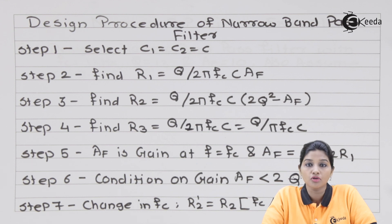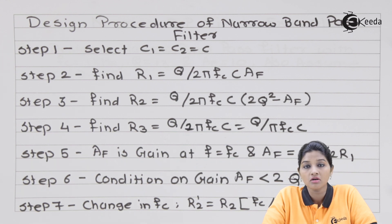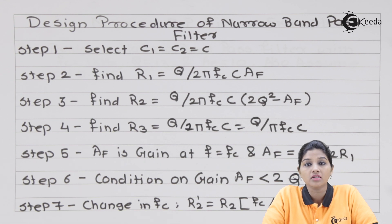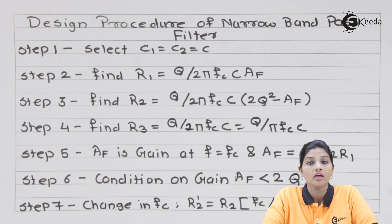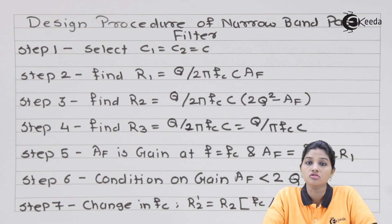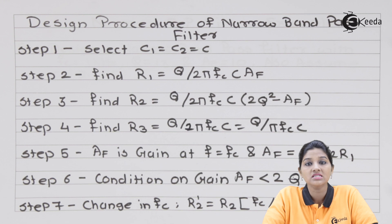Another important term related to filters is the Q factor. Q factor is the ratio of energy supplied to the filter to the energy dissipated by the filter in one cycle of operation. Q factor plays an important role in filter design because its value decides which type of band pass filter is used. If Q is less than 10, it is called a wide band pass filter; if Q is greater than 10, it is called a narrow band pass filter.